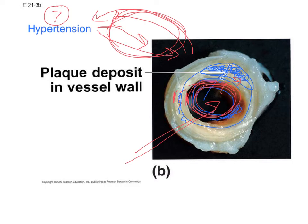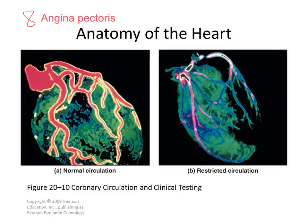Even if you have pretty good cholesterol numbers, the slower blood flows due to high blood pressure, the more likely you are to develop atherosclerosis. Even with a good diet, if you have high blood pressure you can ultimately end up with atherosclerosis — which is responsible for roughly half of deaths in the United States.